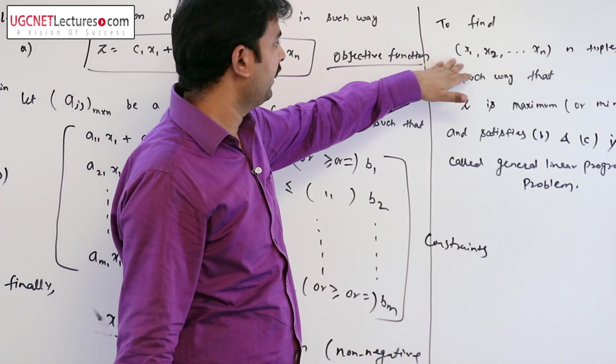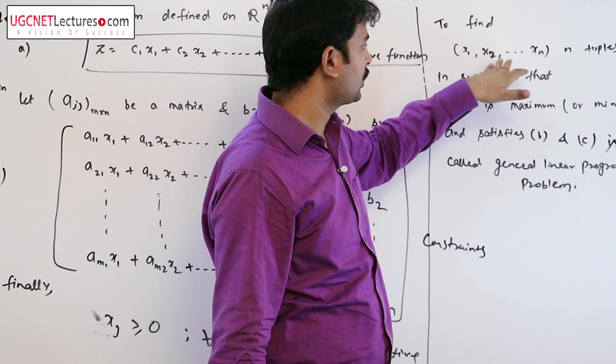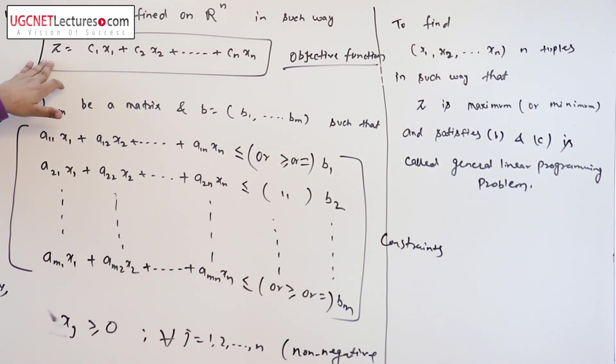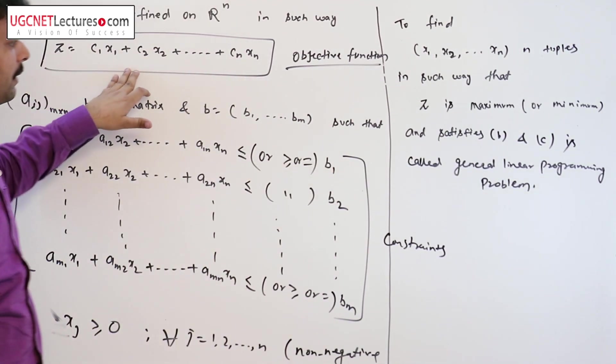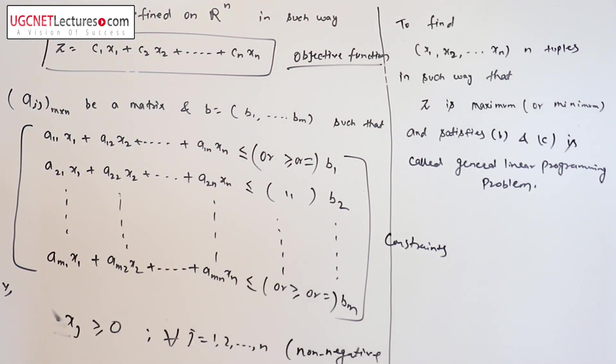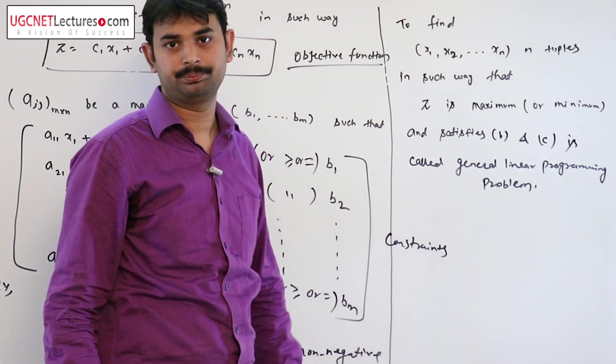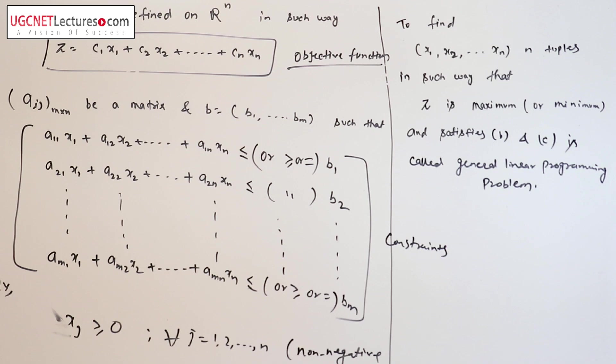If we find x₁, x₂, and xₙ in such a way that this z is optimum and satisfies these two equations, it's known as general linear programming problem. Thank you very much.